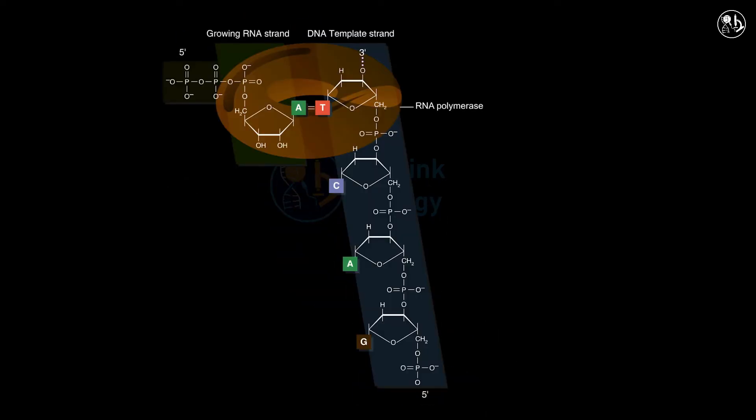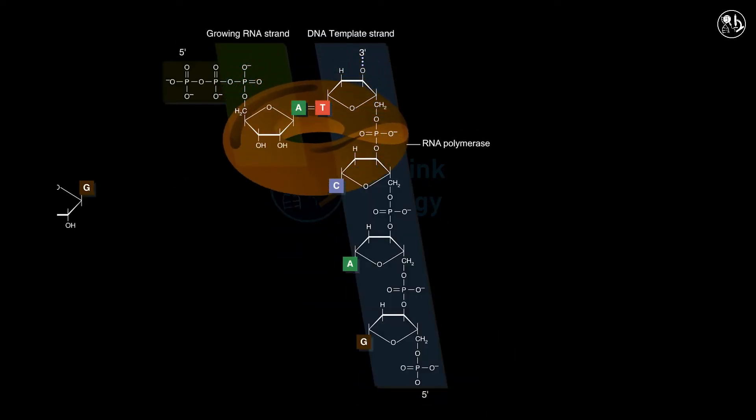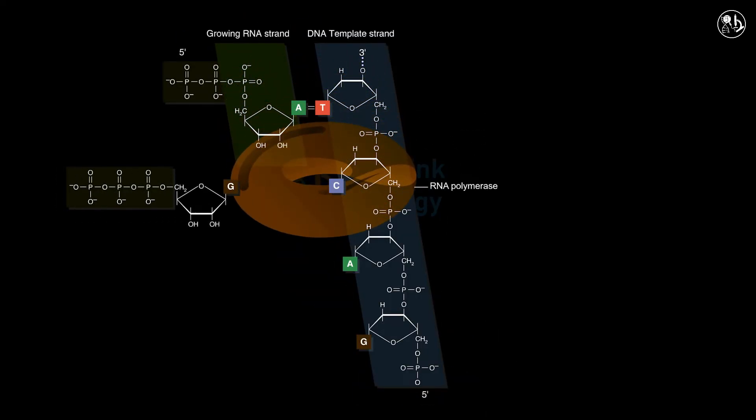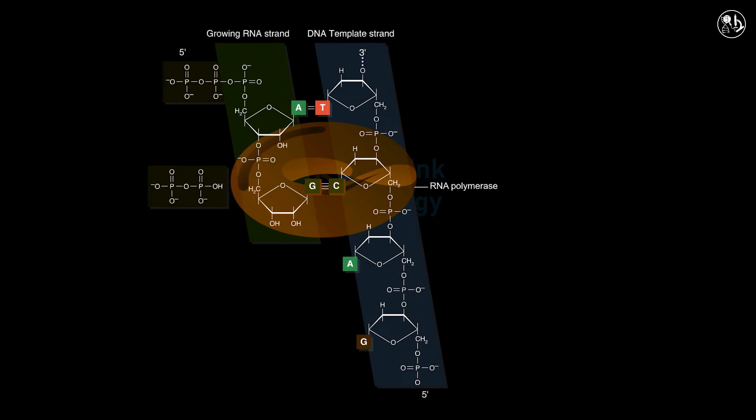The RNA polymerase synthesizes an RNA strand by selecting the precursor nucleotide that can form a complementary base pair with the nucleotide on the template strand. As in DNA replication, the polymerase can catalyze the formation of a phosphodiester bond between the 3' end of the new RNA strand and the 5' phosphate of the RNA precursor base. The formation of the bond results in the release of two phosphates from the precursor.